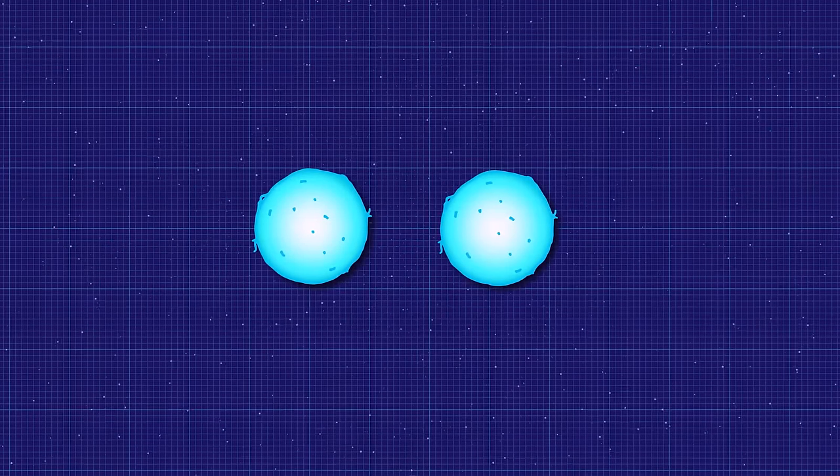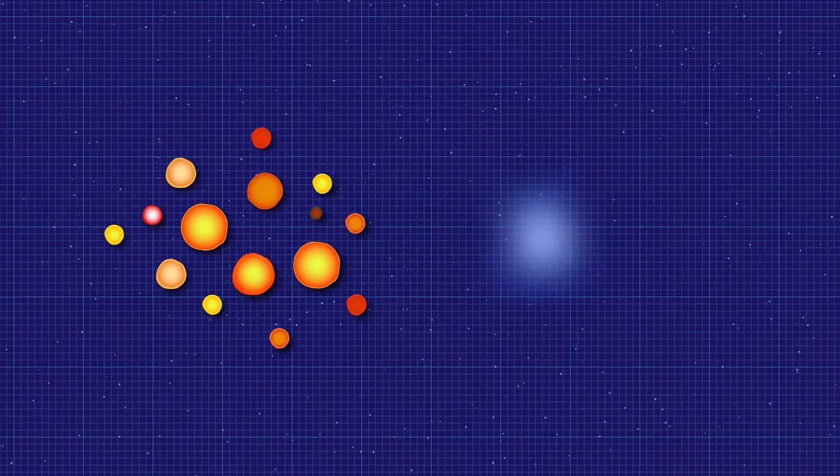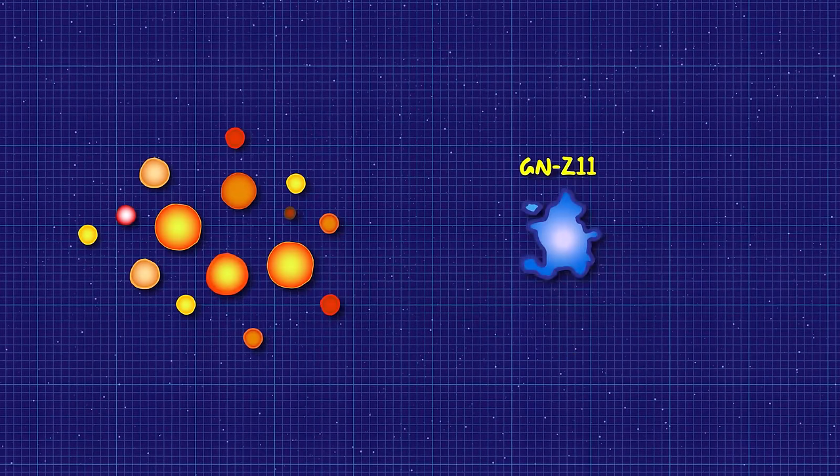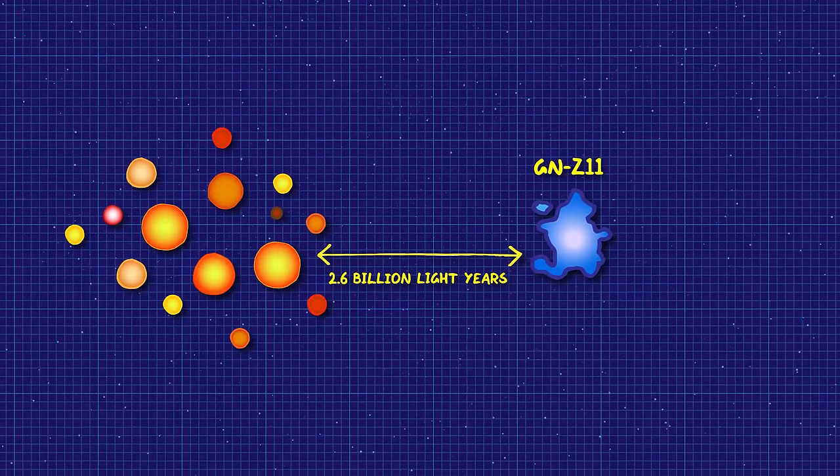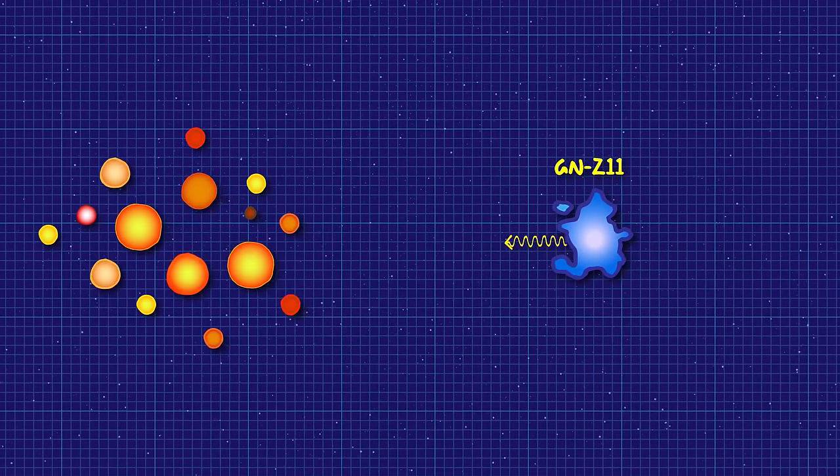Over the next 400 million years, space expanded. The first generation of stars formed and exploded. Then gravity pulled their remnants into the second generation of stars. This is where our atoms were 400 million years after the Big Bang, when the young galaxy GNZ 11, sitting just 2.6 billion light-years away, emitted some light in our direction.